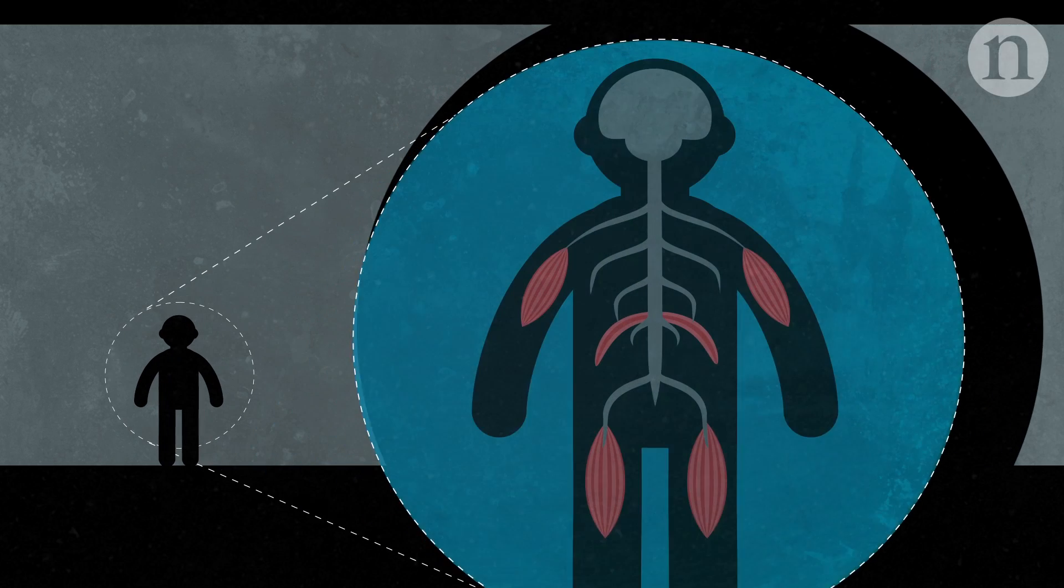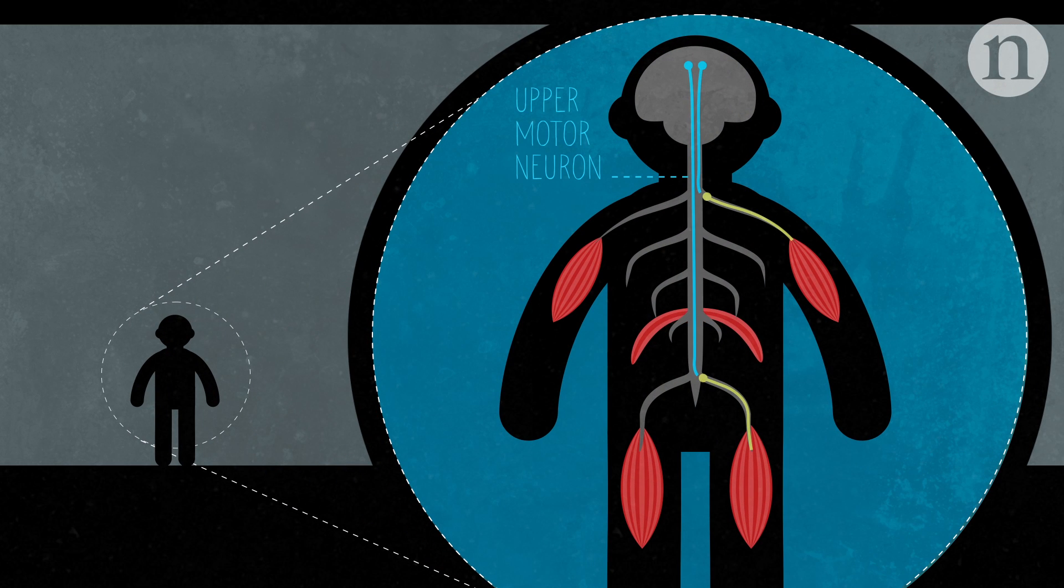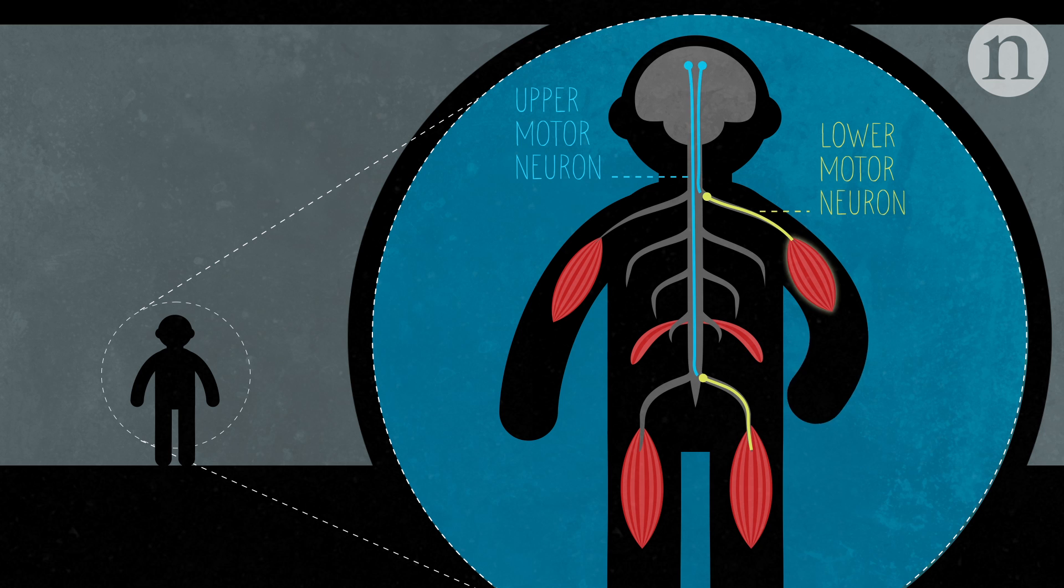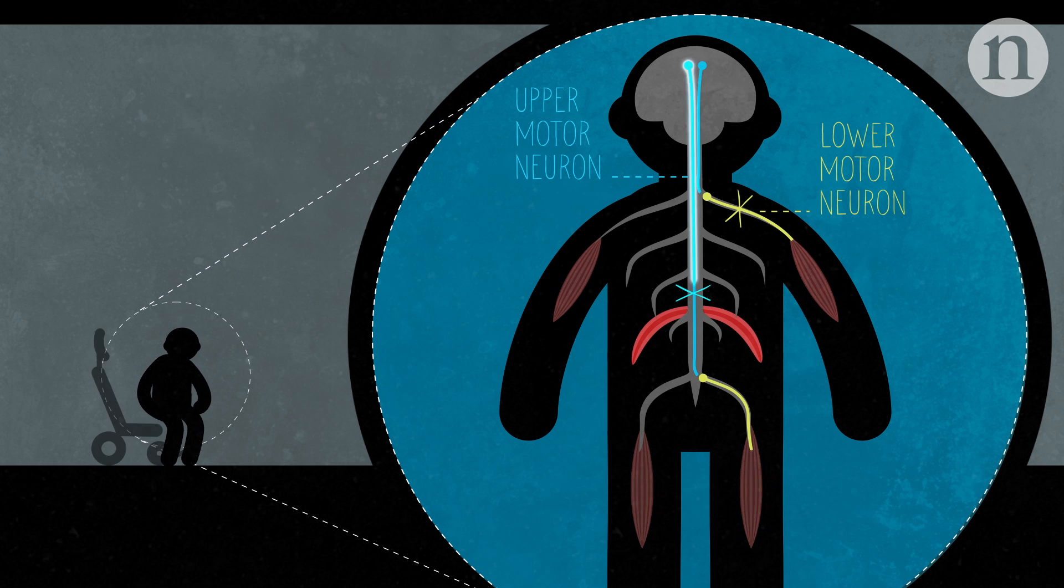It's characterized by the deterioration and loss of both upper and lower motor neurons. As the motor neurons stop sending signals, the muscles weaken, leading to paralysis.